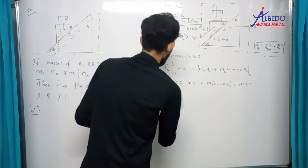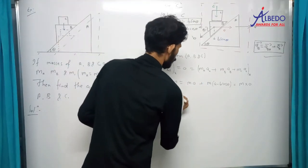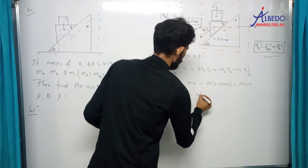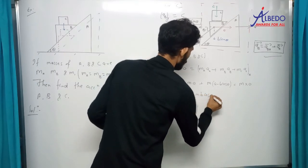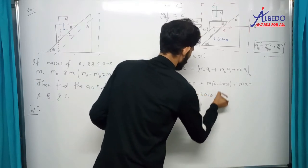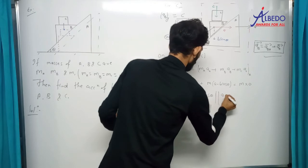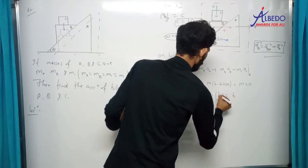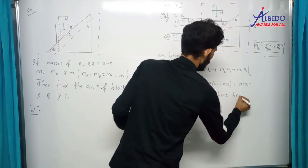And this implies: 2MA = MB cosθ, so 2A = B cosθ. यह पहला equation हो गया.